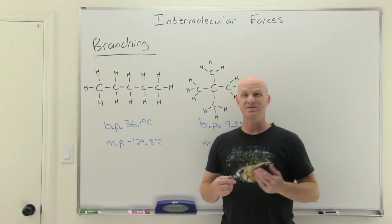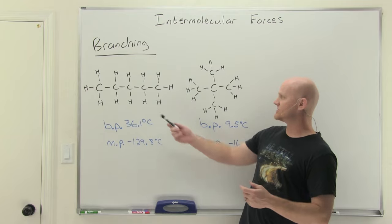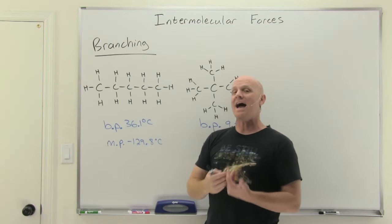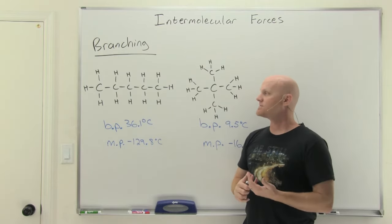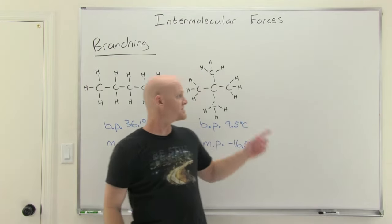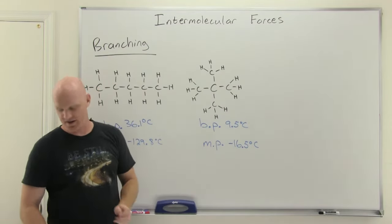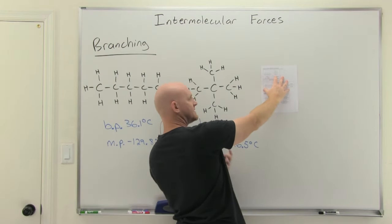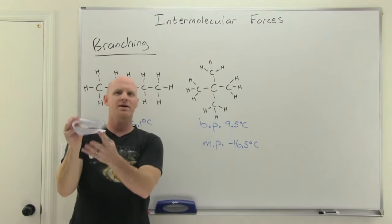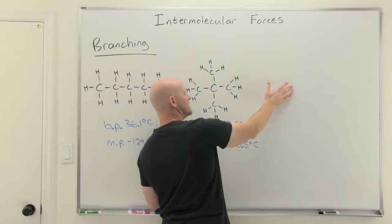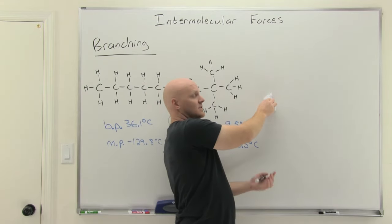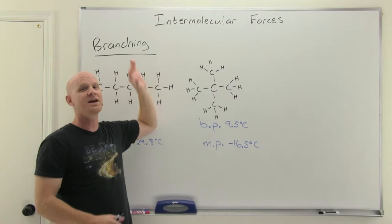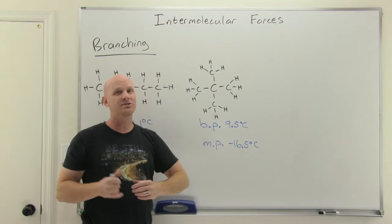Now we need to talk about one oddity that deals with branching. These two hydrocarbons both have five carbons and 12 hydrogens — exactly the same molecular weight. But it turns out they don't have the same surface area. The structure on the right is more branched, and more branching gives you a more compact structure. Like if I coated a piece of paper in glue and stuck it flat to a board it would stick, but if I crumpled it up first, it has less contact area with the board — less of a chance to stick. Similarly, more compact structures have lower surface area and lower London dispersion forces.